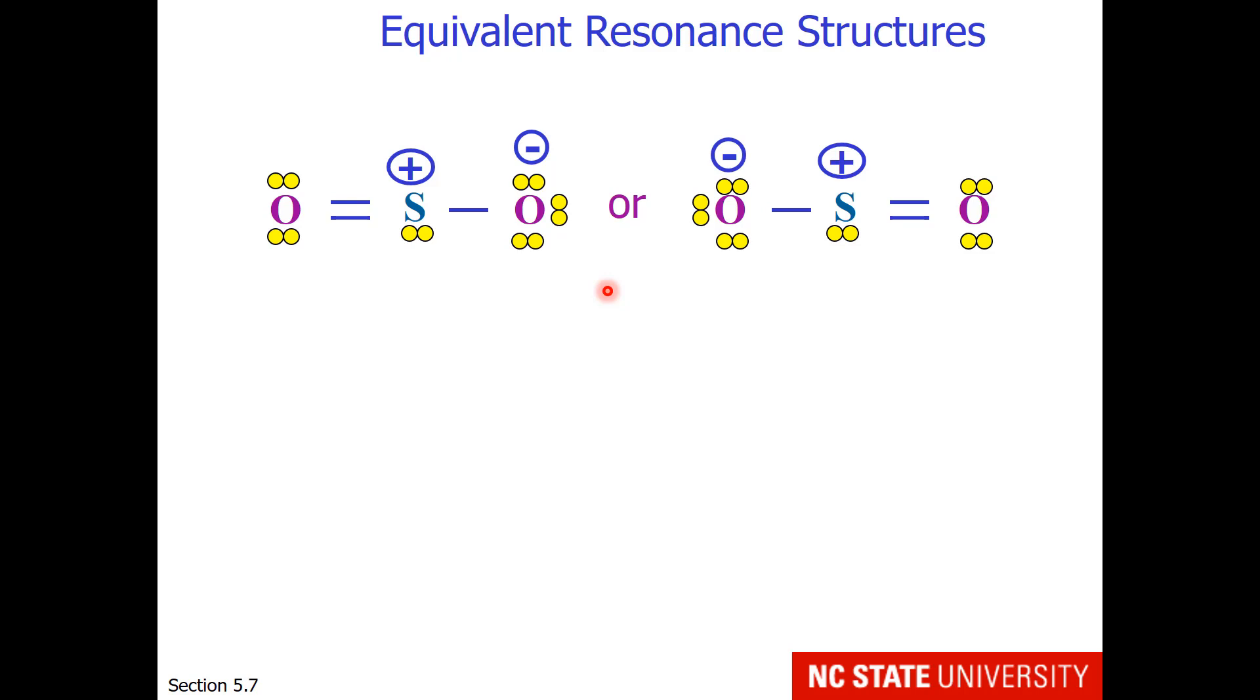There's a couple ways one can recognize equivalent resonance structures. One is by seeing the mirror plane where these are reflected, that it is simply a reflection of one Lewis structure and another. One could also look at the formal charges. Each structure has sulfur with plus one formal charge, an oxygen atom with minus one formal charge, and another oxygen atom with zero formal charge. So if the individual formal charges on the atoms are the same, then one has equivalent resonance structures.